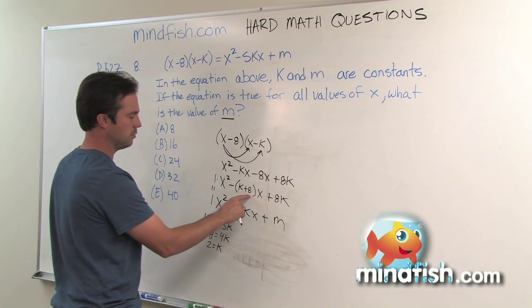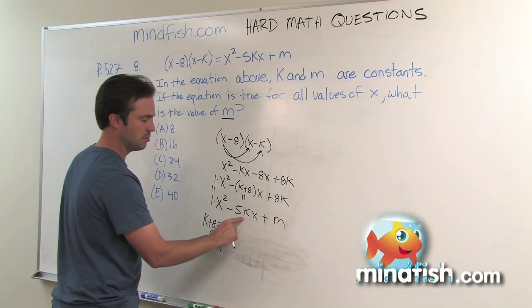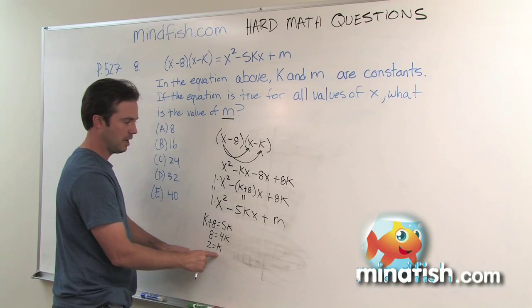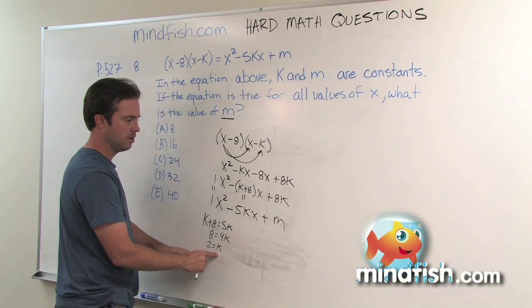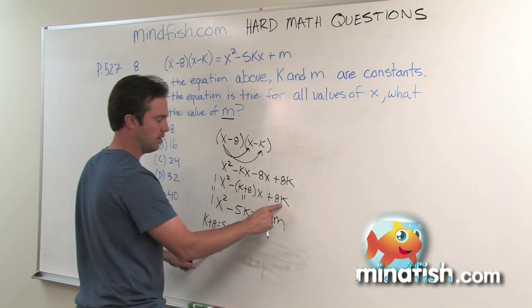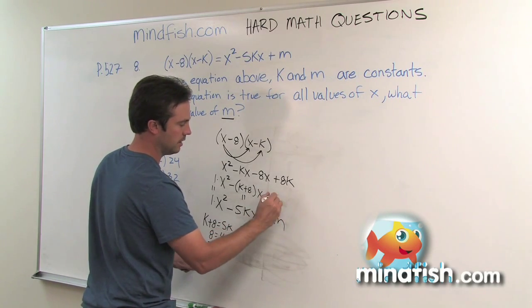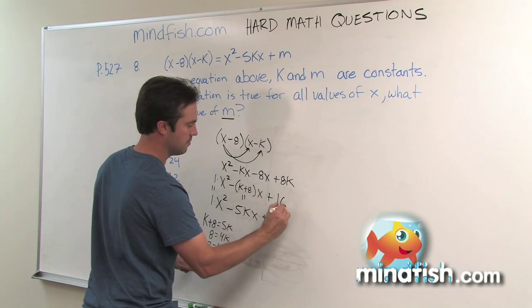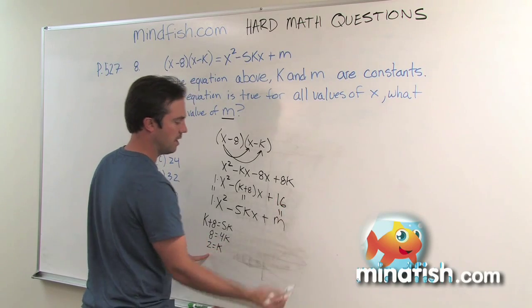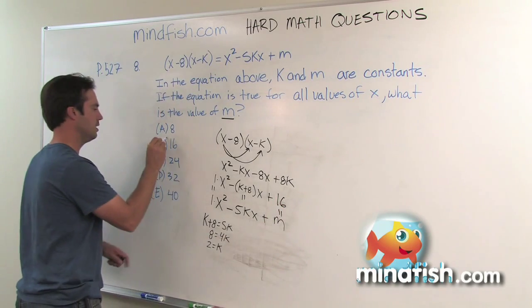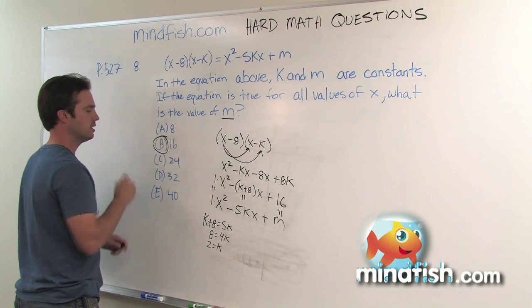Now you can see that both x terms become ten and ten, so they match. Once I know k is two, I know that the constant term eight k is now 16. So m is going to be 16.